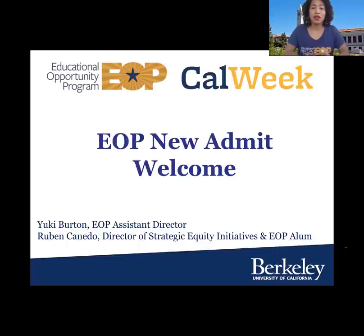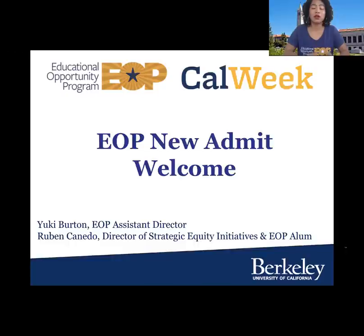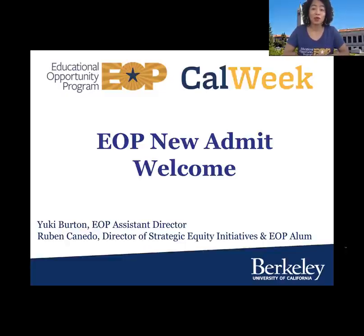We want to make sure you are clear about the EOP eligibility criteria. If you received a welcome message from us, that means that you identify as any one of the three following: either a first generation — meaning the first in your family to pursue a four-year degree — a low-income student, or a historically underrepresented student. The EOP definition can vary by different campuses, but at Berkeley, if you're any one of those three, you're automatically a part of our family. EOP students make up over 40% of the undergraduate population at Berkeley — that's over 12,000 students.